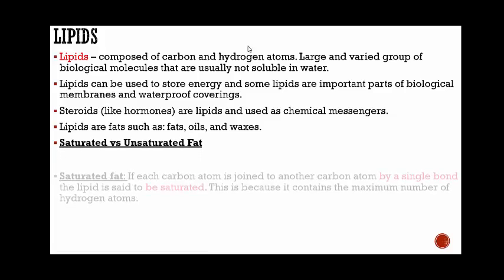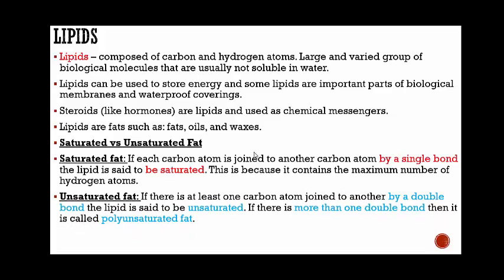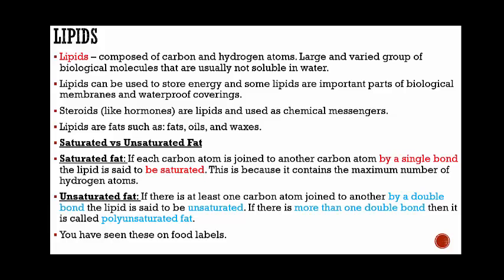Saturated fat and unsaturated fat — you've seen these on food labels. Saturated fat is when each carbon atom is joined to another carbon atom by a single bond, so the lipid is said to be saturated because it contains the maximum number of hydrogen atoms. If at least one carbon atom is joined to another by a double bond, the lipid is unsaturated. If there is more than one double bond, it's called polyunsaturated — poly meaning many. Next time you see a food label with saturated and unsaturated fat, you'll know where it comes from.